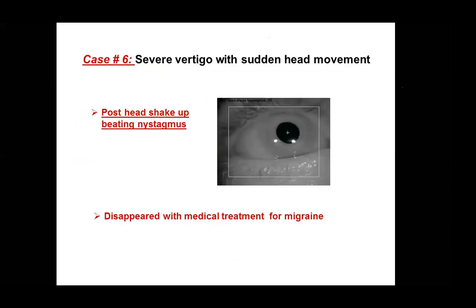As I mentioned, some patients have symptoms in between attacks. The majority have symptoms in episodes, but some have symptoms between attacks. One of these patients has severe vertigo with sudden head movement, and we found a very interesting finding which again refers to a central side of the lesion: post-head shake vertical nystagmus.